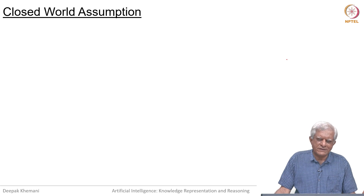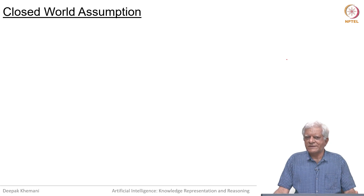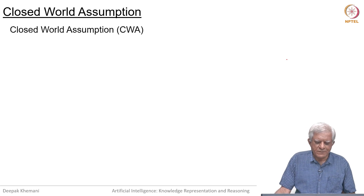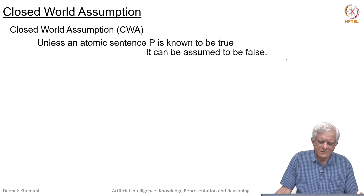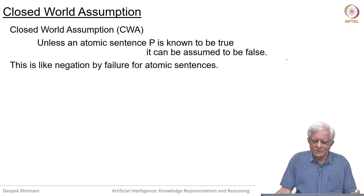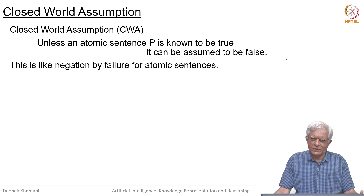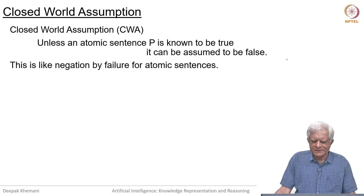One of the simplest approaches to that is the closed world approach to reasoning, which says to assume that whatever you know is what is there to know. This is called the closed world assumption: unless an atomic sentence p is known to be true, it can be assumed to be false. This is like negation by failure that we saw when looking at Prolog, except that this applies only to atomic sentences.